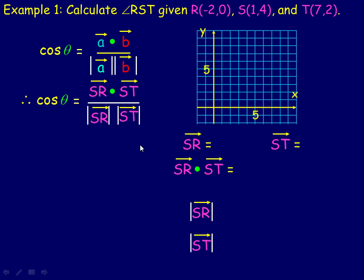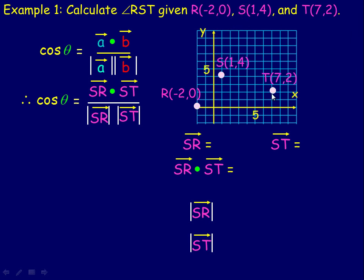Normally, if we have the components of the vectors, we can easily calculate the dot product and the two magnitudes and then find the angle. In the example on the next page, we're asked to calculate angle RST if these are the vertices of the triangle. We'll plot the points: R at (−2, 0), S at (1, 4), and T at (7, 2), draw in the triangle, and we're asked to find the angle at vertex S.